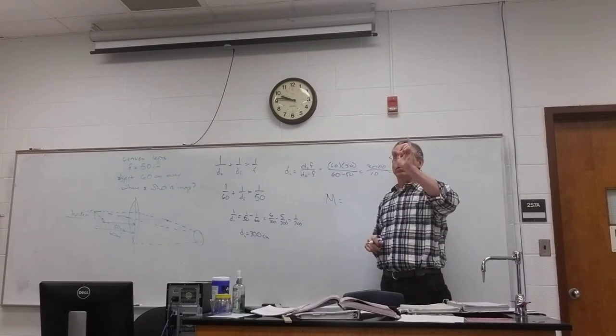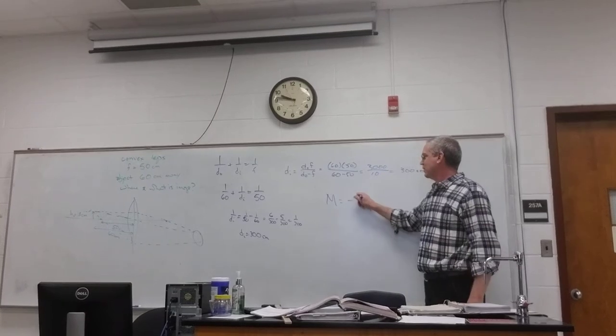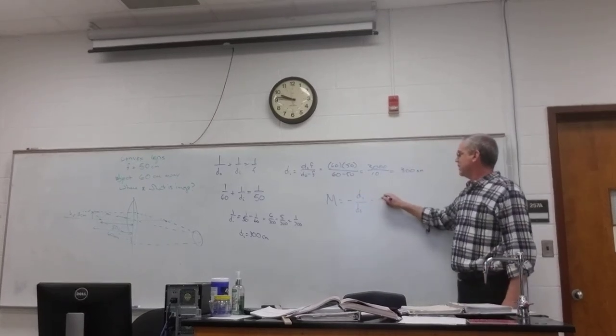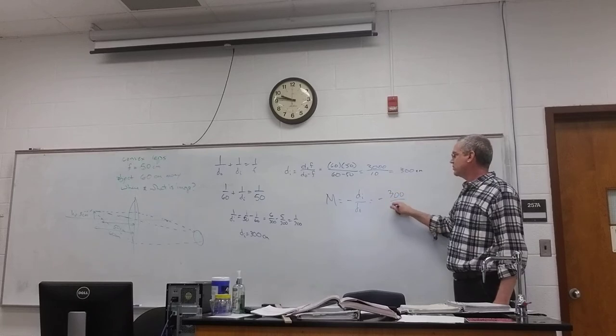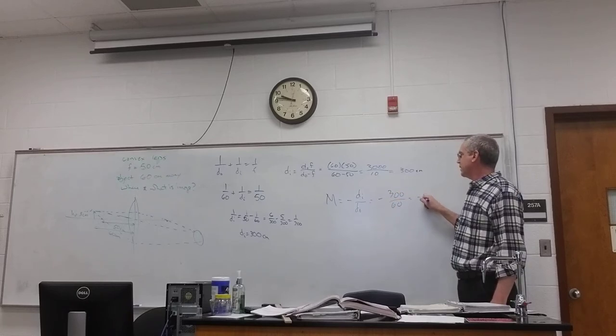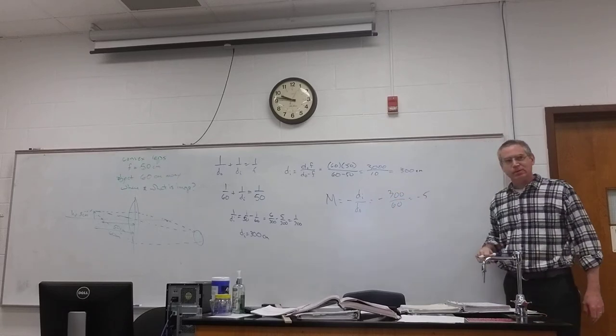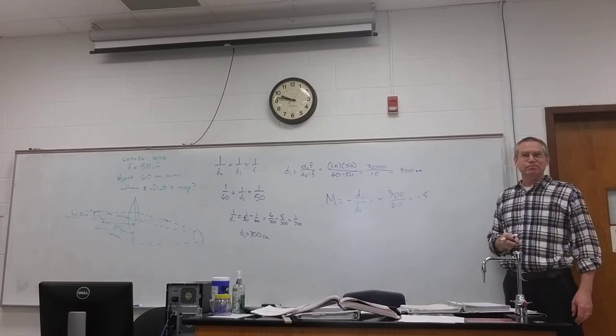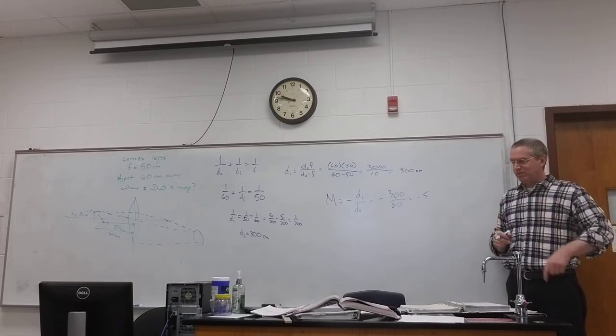No, no, no, that part's right. The negative. Don't forget the negative sign. The image over the object, which is negative 300 over 60 or negative 5. And what are the apparent units here? There aren't. All right. There are none.